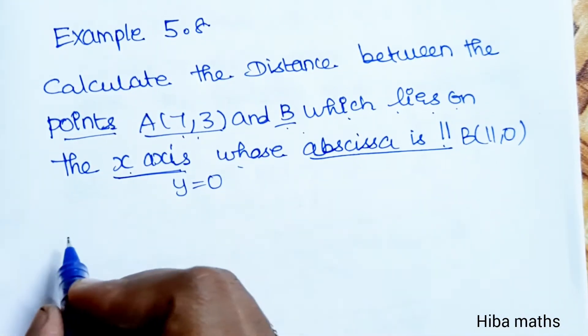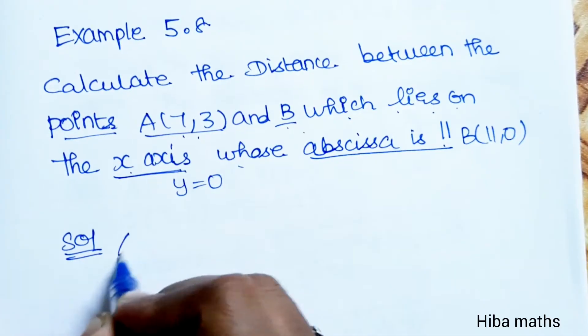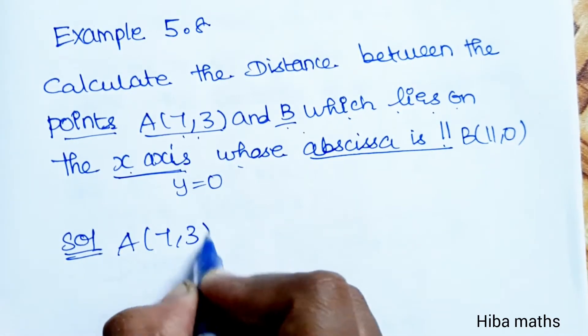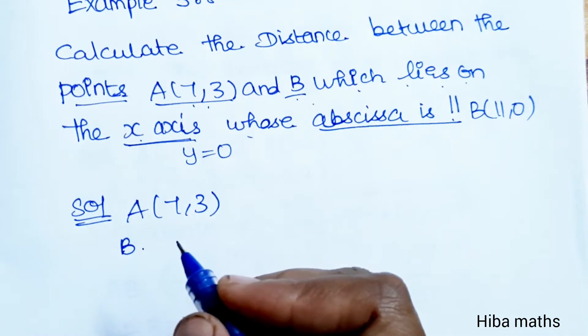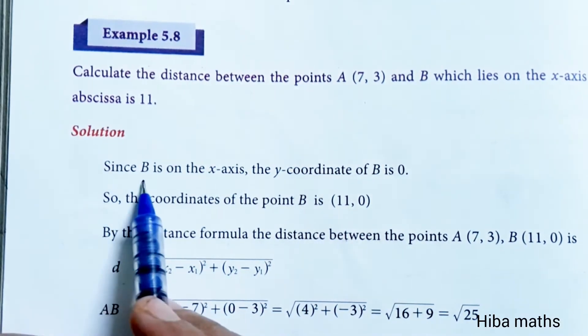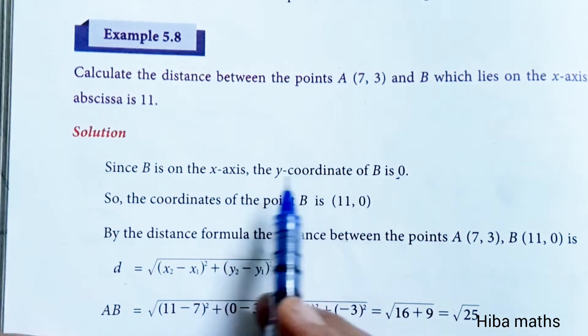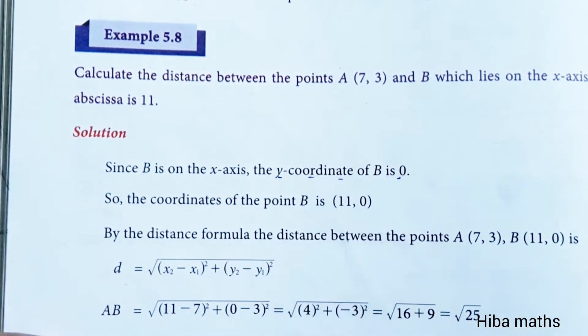Let's solve this using the distance formula. Point A has coordinates (7,3), and point B is given in the statement. Since B is on the x-axis, the y-coordinate of B is 0.